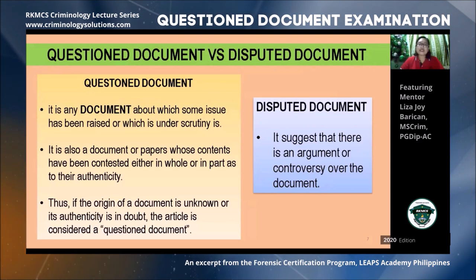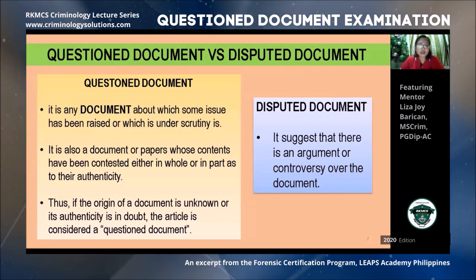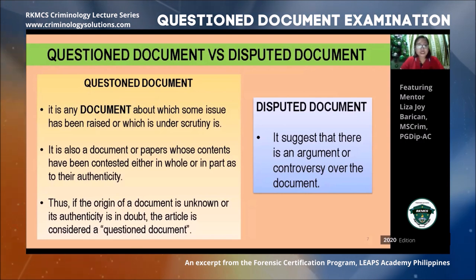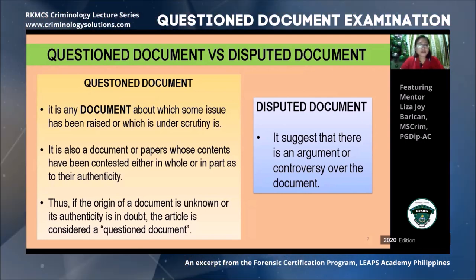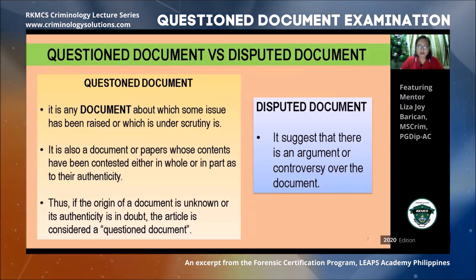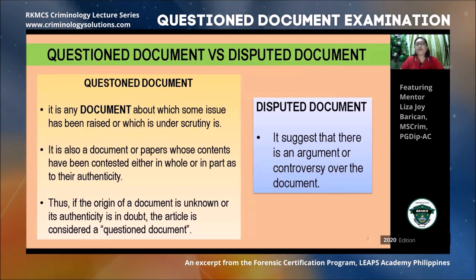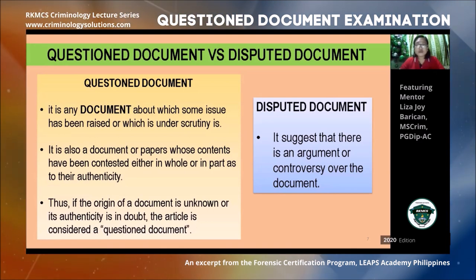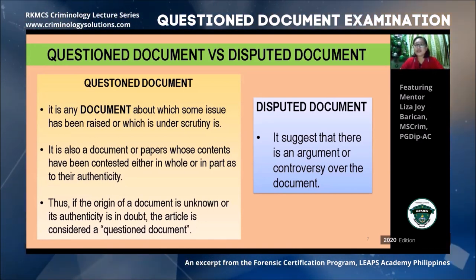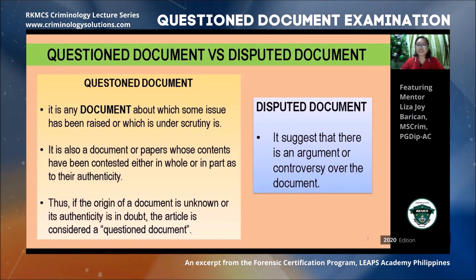Now let's talk about the difference between a questioned document and a disputed document. When you say questioned document, it is any document about which some issue has been raised or which is under scrutiny. It is also a document whose contents have been contested, either in whole or in part, as to their authenticity. Thus, if the origin of the document is unknown or its authenticity is in doubt, the article is considered a questioned document. A disputed document, on the other hand, suggests that there is an argument or controversy over the document.